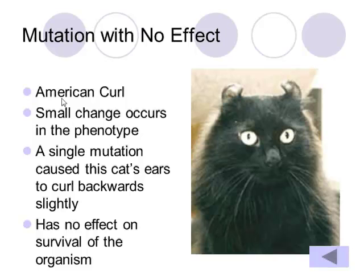Some mutations have no effect. An example of this is the American curl cat. There are small changes in phenotype like curled ears, but this is not impacting whether or not this cat can mate and have offspring. As a result, we would say this mutation has no effect.